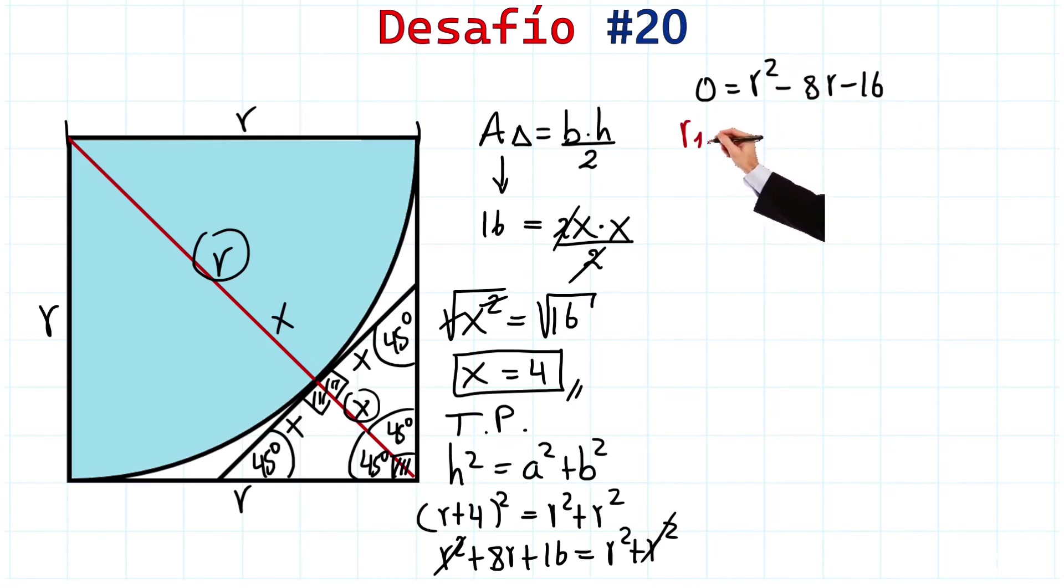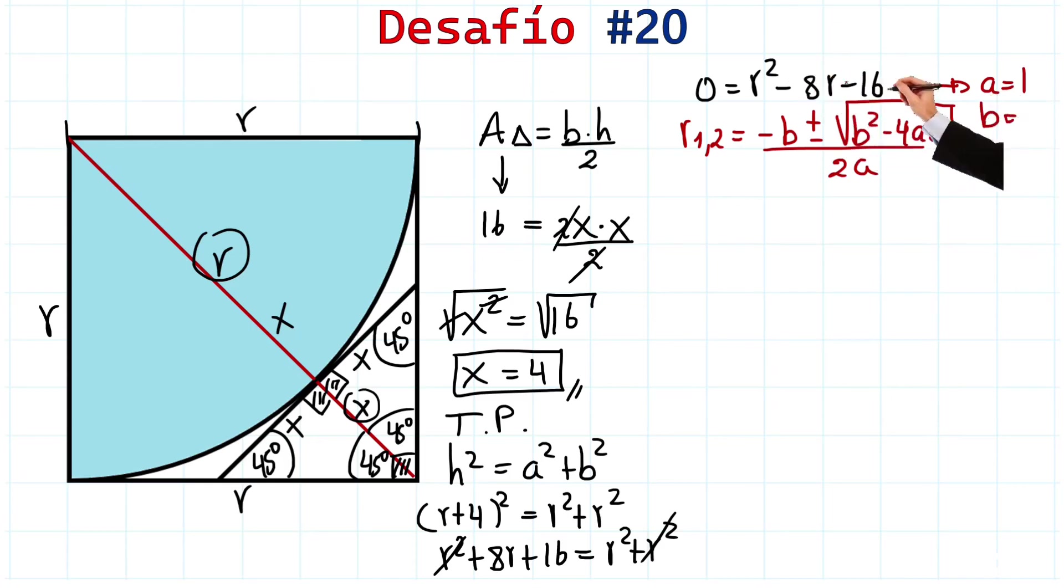Remember, we're going to have two solutions, R1, 2, which will be equal to negative B plus or minus, the square root of B squared minus 4AC, all over 2A. Here, notice A is the term that accompanies R, which is 1. Let's write it down here. A equals 1. Very good. B is the term that accompanies R, which is negative 8, and C is the independent term, which is negative 16. Excellent! Let's substitute these values here.